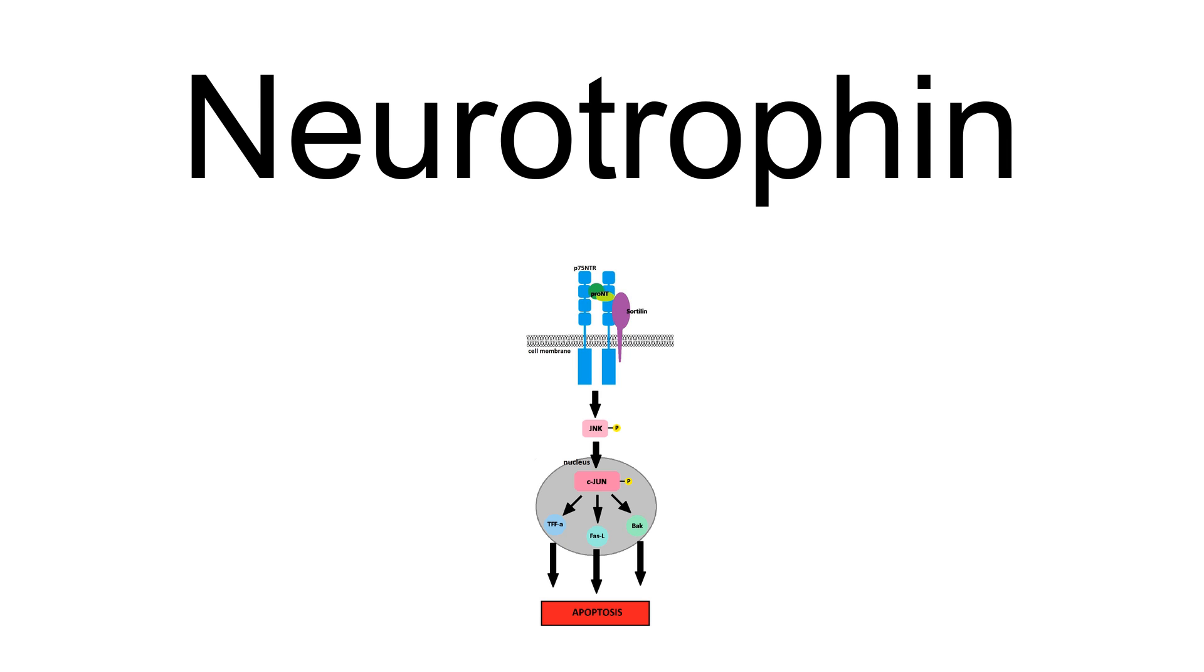Growth factors such as neurotrophins that promote the survival of neurons are known as neurotrophic factors. Neurotrophic factors are secreted by target tissue and act by preventing the associated neuron from initiating programmed cell death, allowing the neurons to survive.